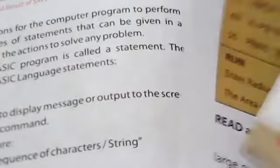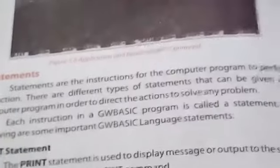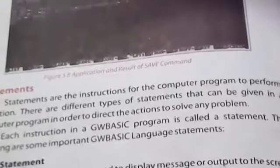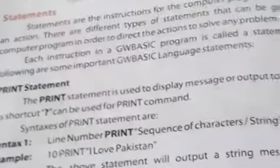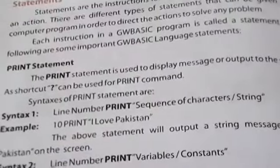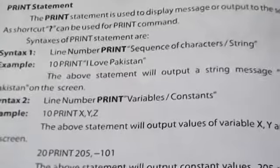Statements are instructions for a computer program to perform an action. There are different types of statements that can be given in a computer program to direct actions to solve any problem. The PRINT statement is used to display a message and output to the screen — if you want to show anything on screen, you use the PRINT statement. The syntax is: line number, PRINT, sequence of characters; or line number, PRINT, variable and constant.